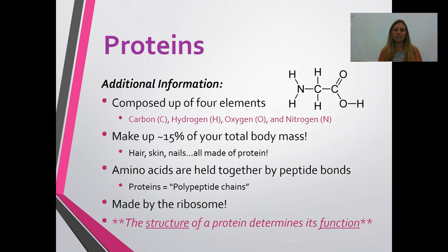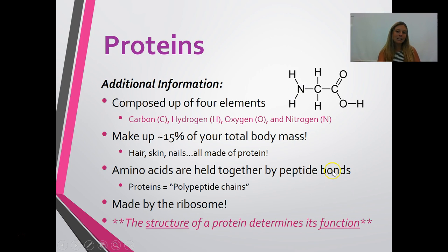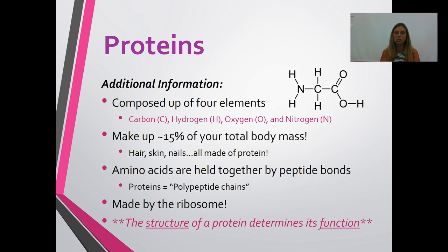Additional information about proteins: remember CHON — carbon, hydrogen, oxygen, and nitrogen. The amino group contains nitrogen, which is what makes it a protein. About 15% of your total body is made up of proteins — your hair, skin, and nails are all proteins. Amino acids are held together by peptide bonds, so proteins are sometimes called polypeptide chains. Proteins are made by ribosomes in your cells, and crucially, the structure of a protein determines its function — change the structure, change the function.